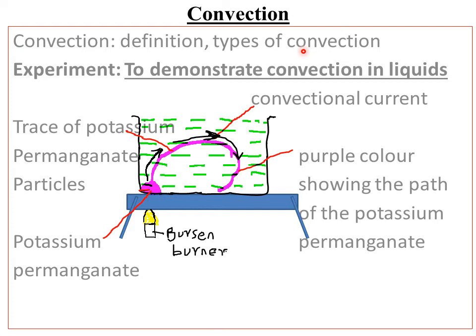To understand convection, we have an experiment demonstrating convection in liquids. The apparatus required is a large beaker half-filled with water, potassium permanganate — which is purple in color — a source of heat such as a Bunsen burner, and a stand.